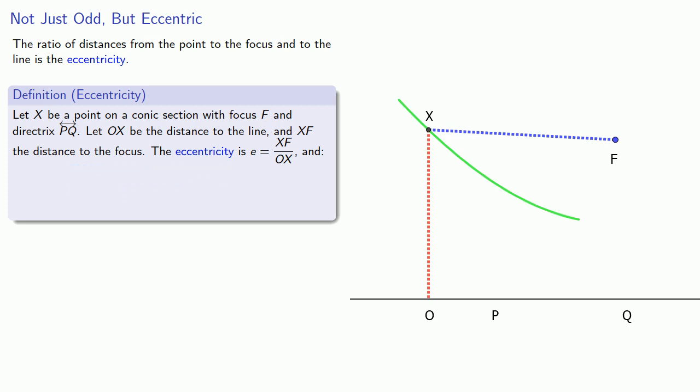If e is less than 1, the conic section is an ellipse. If e is equal to 1, the conic section is a parabola. And, if e is greater than 1, the conic section is a hyperbola.